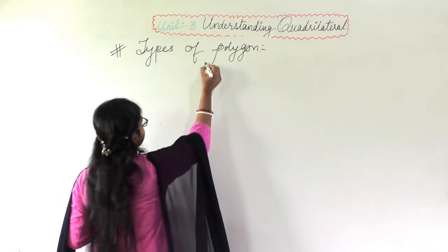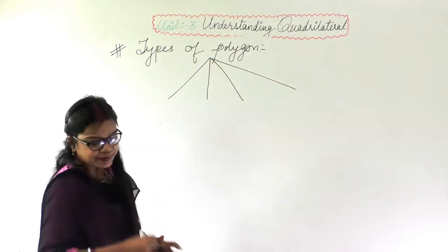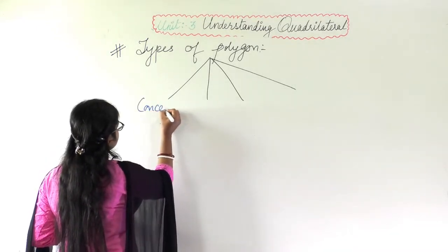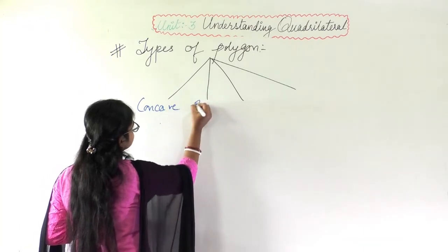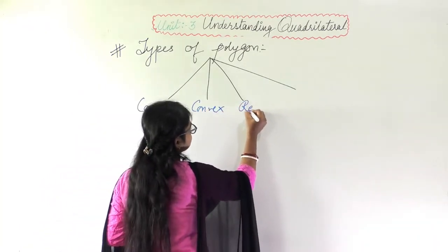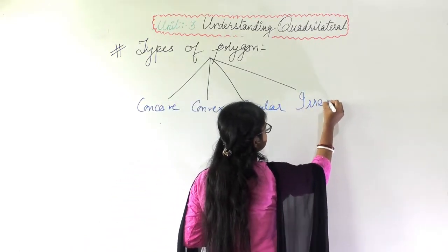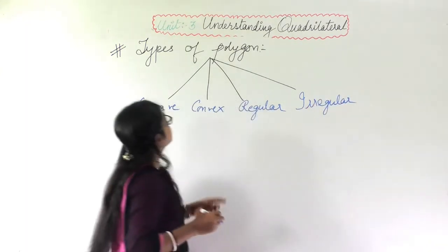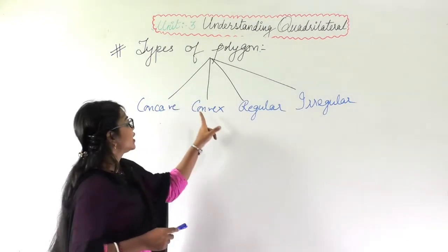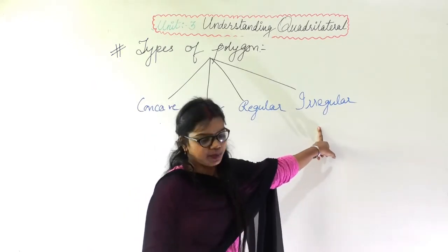The next topic is types of polygon. There are four types: first is concave, second is convex, third is regular, and fourth is irregular polygon.